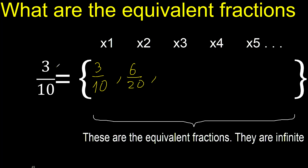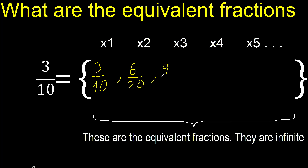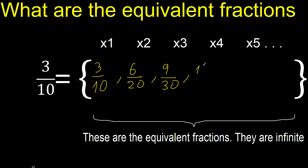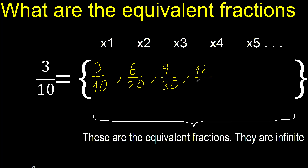3 times 3 is 9, 10 times 3 is 30. 3 times 4 is 12, 10 times 4 is 40.